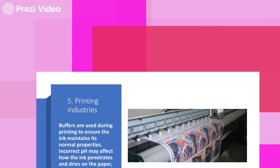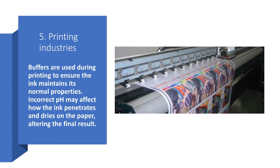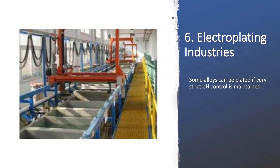Apart from the dyeing industry, buffering agents also find applications in the printing industry — used to ensure ink maintains its normal properties. Incorrect pH or deviations in pH range may affect how the ink penetrates and dries on paper, so buffering agents are needed for effective print quality. Buffers are also used in the electroplating industry, where certain alloys can be plated if their pH is maintained using buffering agents.